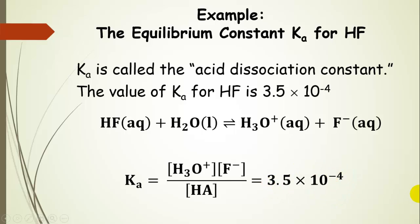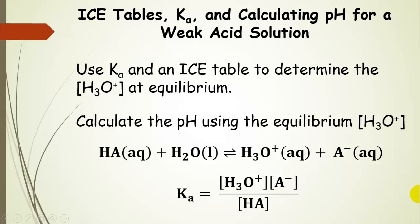If you started thinking about an ICE table, then you're exactly right. We can use that Ka value — that equilibrium constant value — and an ICE table to figure out the concentration of hydronium at equilibrium. We can get the concentration of everything else at equilibrium too, but what we care about most is the hydronium ion concentration, because we use it to calculate the pH.